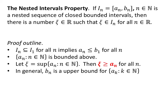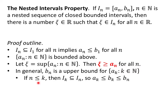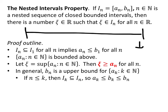Now, b sub n — the right-hand endpoint of any of these intervals — will also be an upper bound for all of the left-hand endpoints. We do this in cases. If n is less than or equal to k, that means i sub k is further down the list of nested intervals, which means it is a subset of i sub n. So here is i sub n, and i sub k sits within that set. We need to establish that a sub k is less than or equal to b sub n. Well, a sub k is less than or equal to b sub k, and b sub k is less than or equal to b sub n.